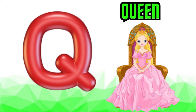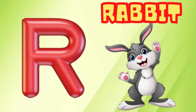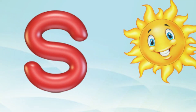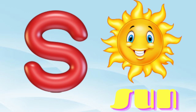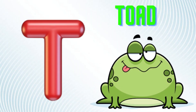Q is for Queen, Q-Q-Queen. R is for Rabbit, R-R-Rabbit. S is for Sun, S-S-Sun. T is for Toad, T-T-Toad.